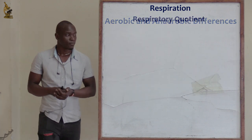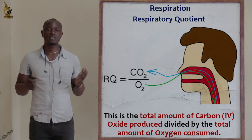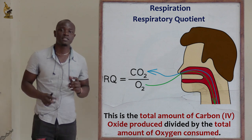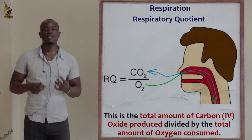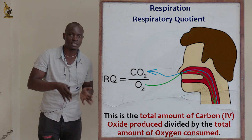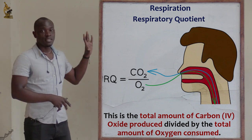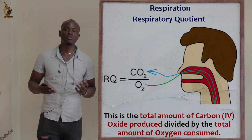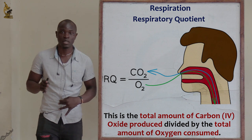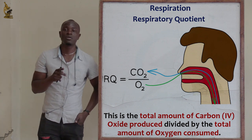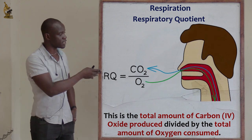Now let's look at respiratory quotient. Respiratory quotient is the ratio showing the amount of carbon dioxide produced against the oxygen consumed. The equation is: RQ = CO₂ / O₂. To define respiratory quotient, you just refer to this formula — it is the ratio which compares the carbon dioxide produced over the oxygen consumed.